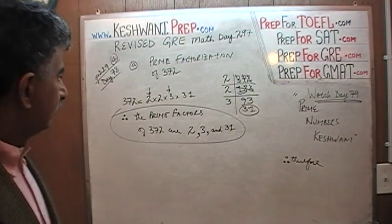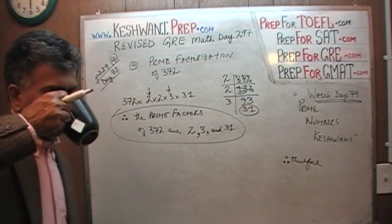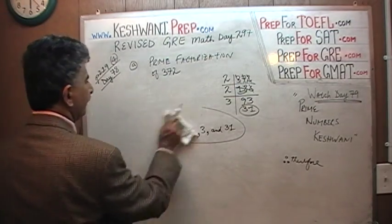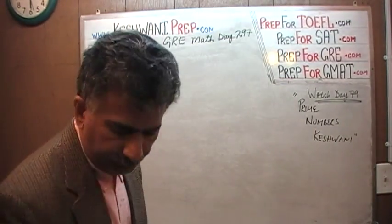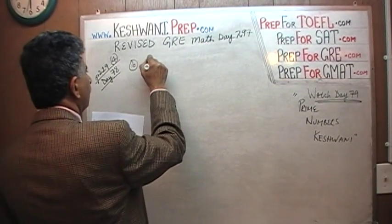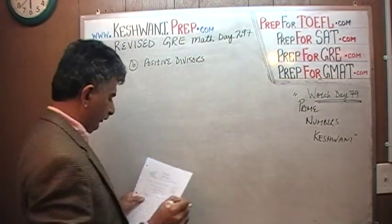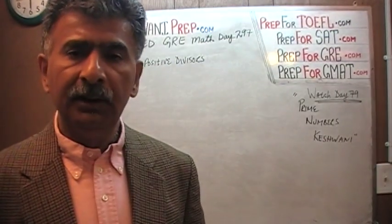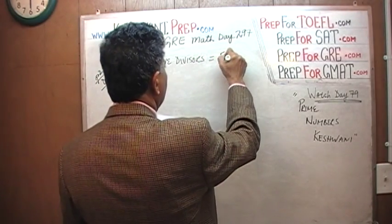Let's move on to part B. In part B, they're asking for positive divisors. Positive divisors is a very annoying, tedious, geeky, nerdy way of saying 'factors.'